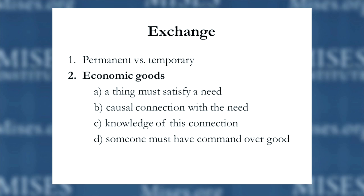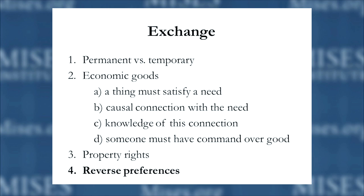For an exchange to take place we need economic goods — things that abide by the criteria Carl Menger laid out. We need a clearly defined set of property rights — we need to know what goods we own in order to trade, and what goods somebody else owns that we can obtain to increase our happiness. And finally, most importantly, we need what are called reverse preferences — the things you have, you must value less than the things somebody else has, and vice versa. All exchanges rely on a disagreement of value.